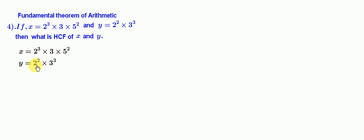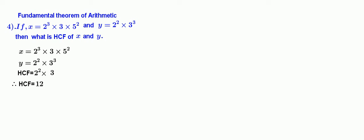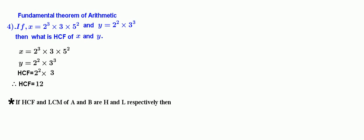Identify the common prime factors with the lowest exponent. 2 squared is a common prime factor with the lowest exponent. 3 to the power of 1 is also a common prime factor with the lowest exponent. Therefore, HCF equals the product of these common prime factors: 2 squared into 3, which equals 4 times 3, giving HCF equal to 12.